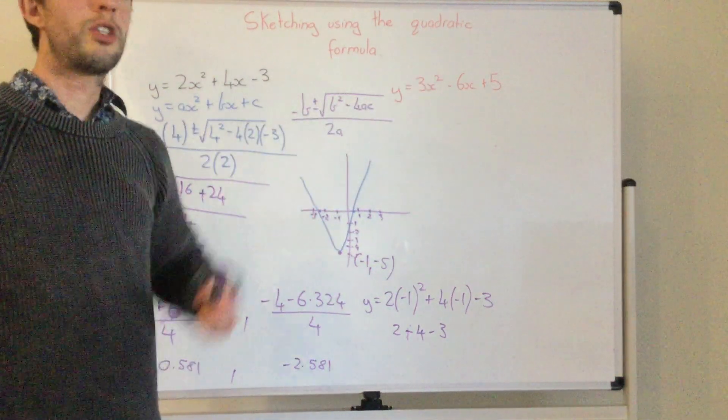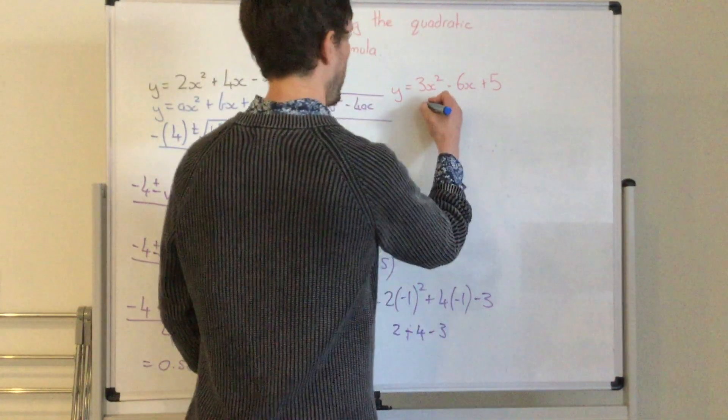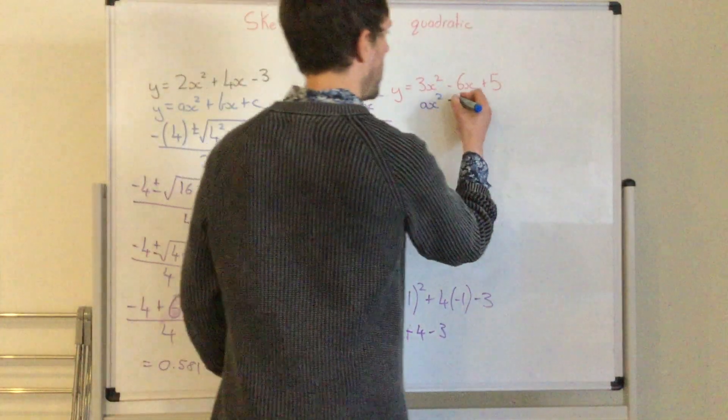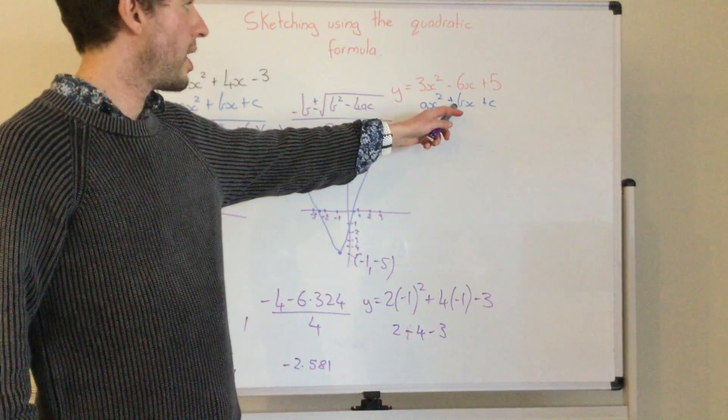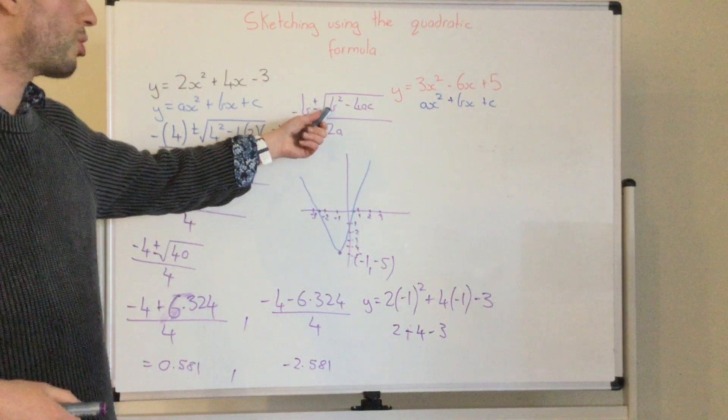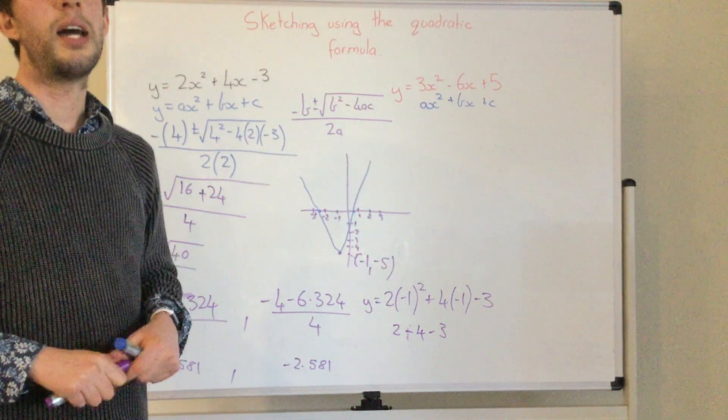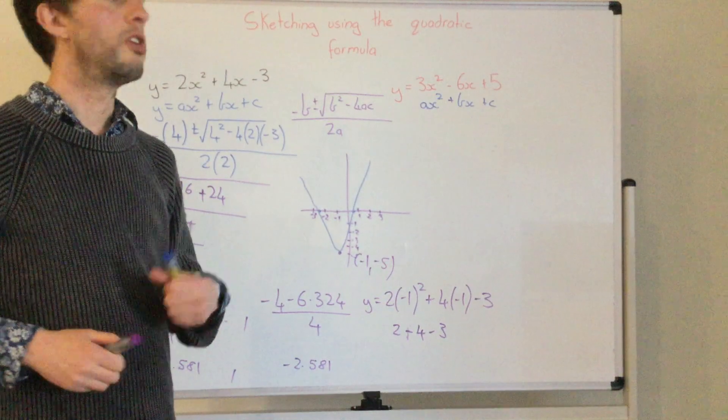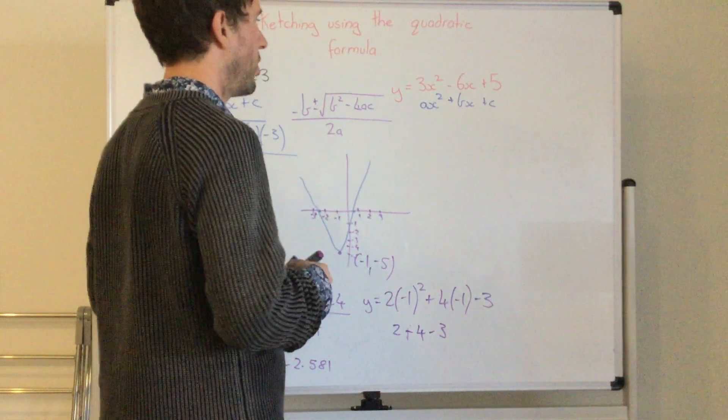If we look at this equation now, 3x squared take 6x plus 5. First thing I need to think about is my quadratic equation ax squared plus bx plus c. So a is 3, b is negative 6 and c is 5. Now the first thing I need to do is substitute the values into here. Just remember, if this is a negative, then we know it doesn't go through the x axis.